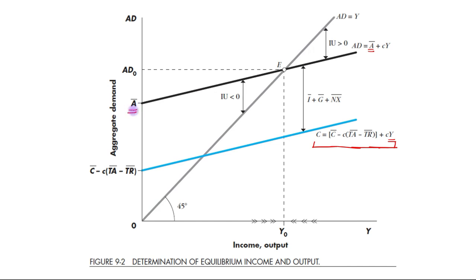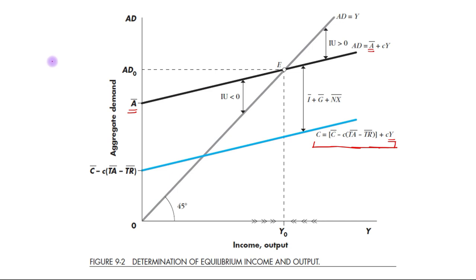The intercept can be found by putting Y equal to zero. At the equilibrium level, income is Y₀ and aggregate demand is AD₀. The next topic — equilibrium income and output — will be studied in the next video. Thank you.